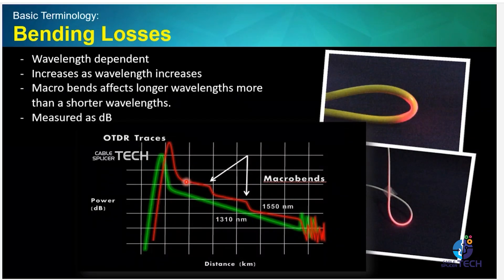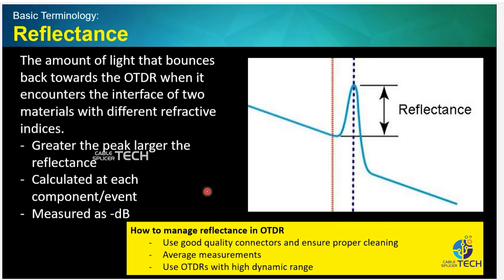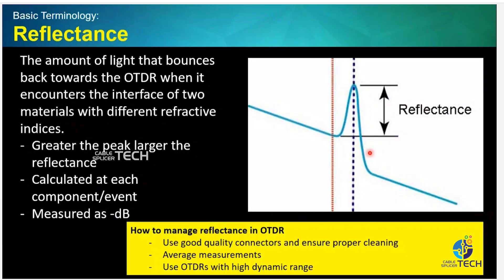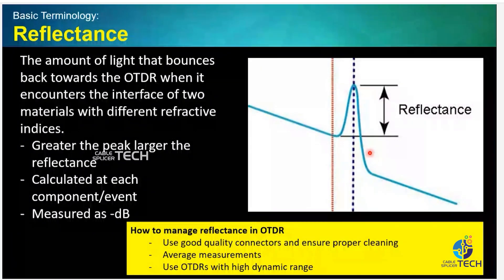So always make sure that you measure two wavelengths. Now, whenever you see any reflectance — meaning any peak — that is going to be your actual reflectance from the connector or end of the fiber. There is a statement: all connectors are reflective, all splices are non-reflective.